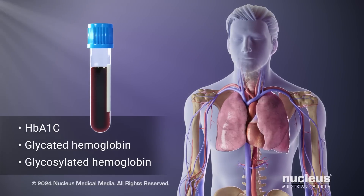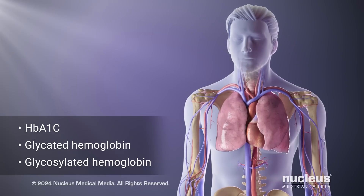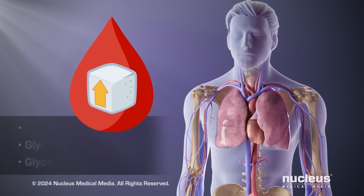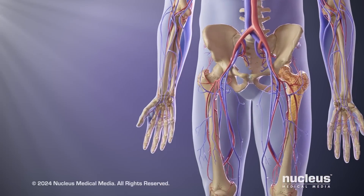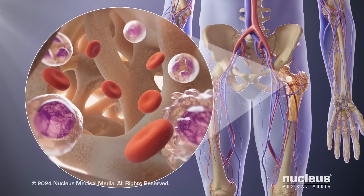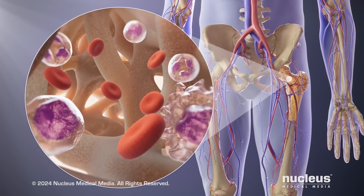This test is often used to screen for or manage diabetes and prediabetes, conditions that can happen when your blood sugar is too high. In order to understand how the test works, it's important to know about red blood cells and how your blood sugar affects them.